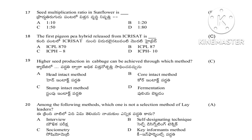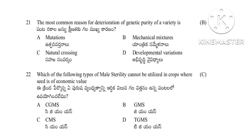Question 19: Higher seed production in cabbage can be achieved through — head intact method, core intact method, stump intact method, or fermentation method. The answer is stump intact method. Question 20: Among the following, which is not a selection method of lay leaders — interview, self-designation technique, sociometric technique, or key informatics technique. The answer is interview, as it is not related to lay leaders method. Question 21: The most common reason for deterioration of genetic purity of a variety — mutations, mechanical mixtures, natural crossings, or developmental variations. The answer is mechanical mixtures.